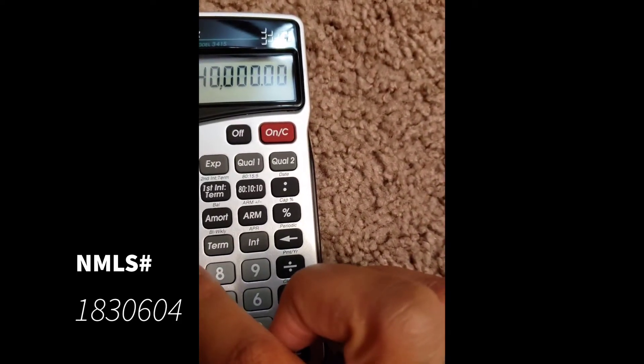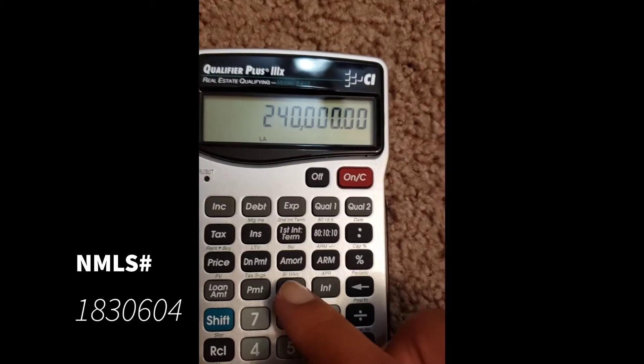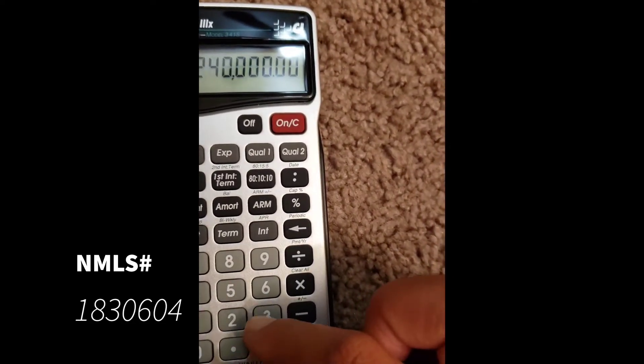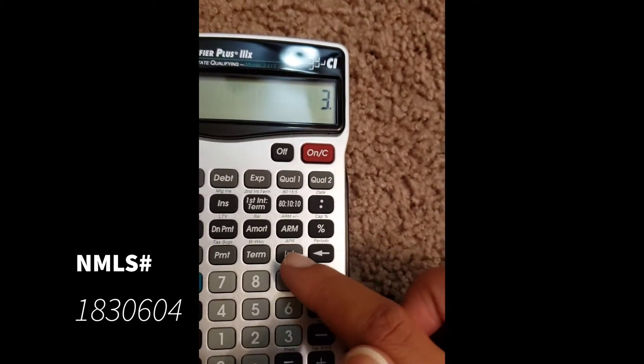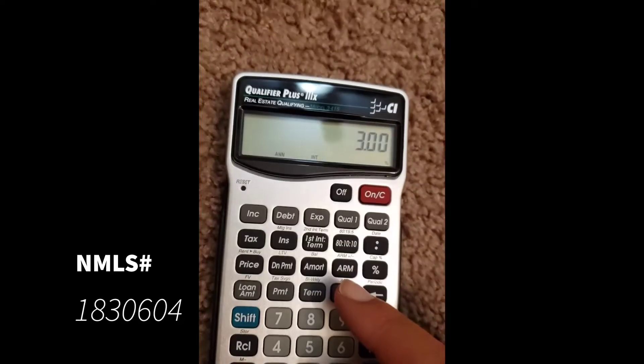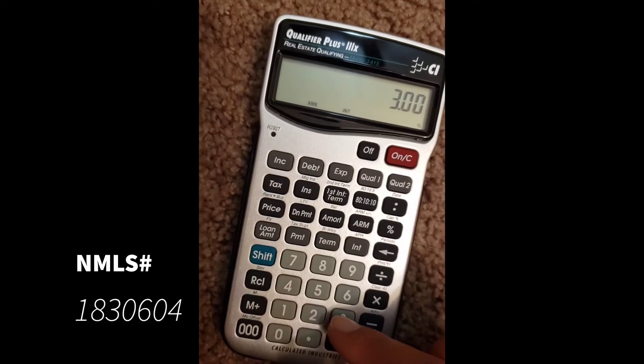This is going to be the payment - how much they pay monthly, the term (how long is their loan), and then the interest rate. So I'm going to do 3% interest rate. We'll do a standard mortgage 30-year term.